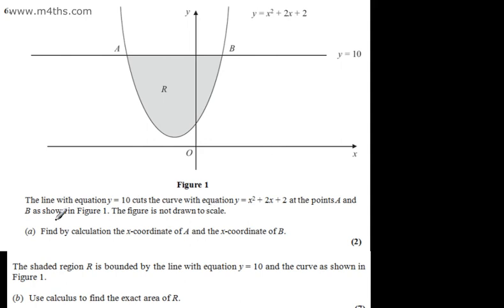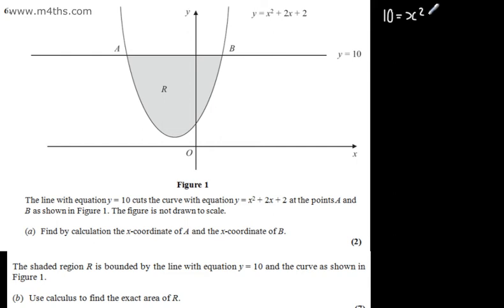In part a for two marks, we need to find by calculation the x-coordinate of A and the x-coordinate of B. Since y equals 10 and y equals x squared plus 2x plus 2, we can use simultaneous equations to write that 10 equals x squared plus 2x plus 2.